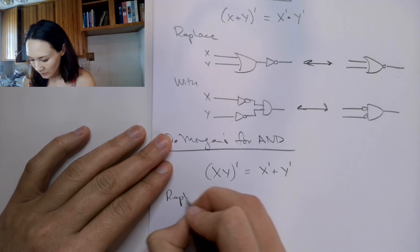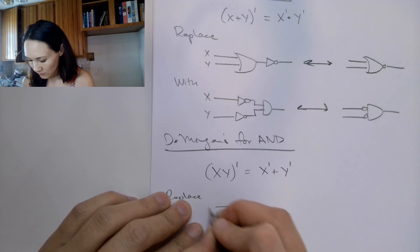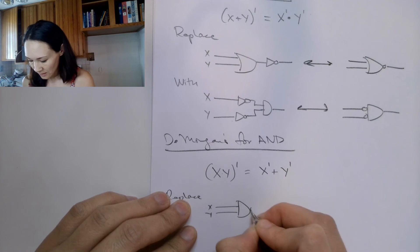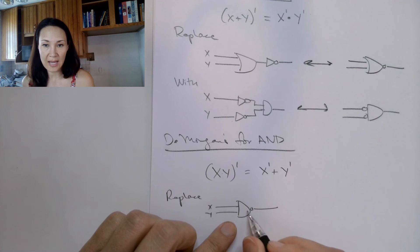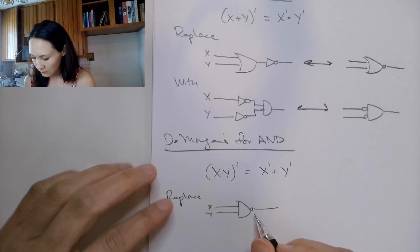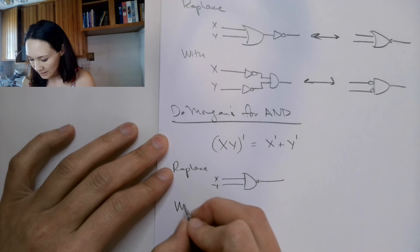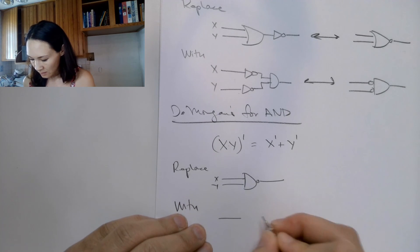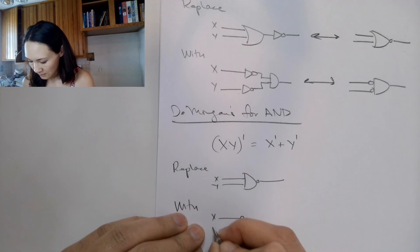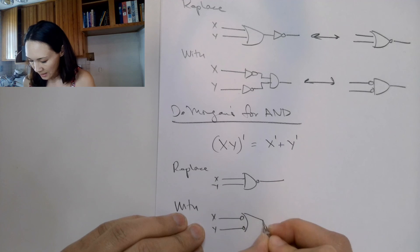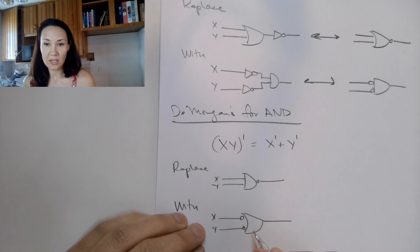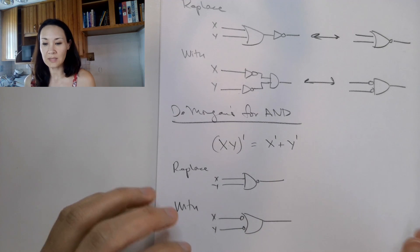So this means that if we have X and Y NANDed, basically an AND and then the inverse of that, then we can replace that with inverting X, inverting Y, and then taking those inverted inputs and ORing them together.